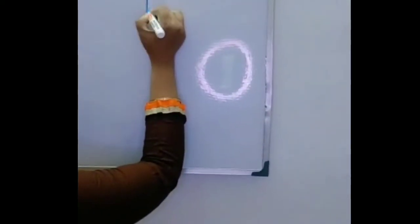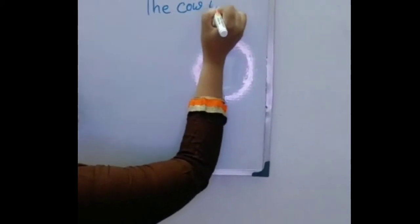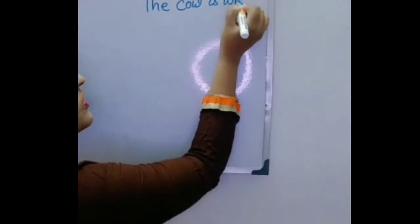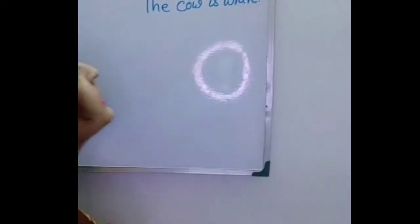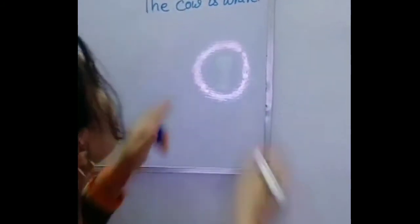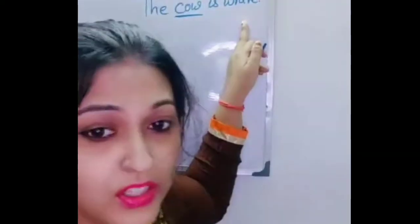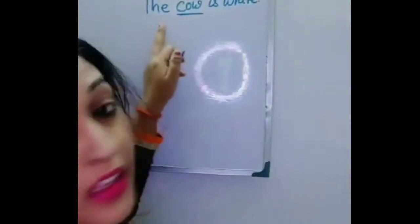Similarly, when we use any object specifically, then we use article 'the'. For example: 'The cow is white.' In this sentence, we are specifically indicating this cow — this cow is white. So here we can use article 'the'.